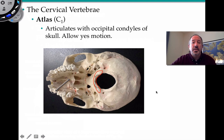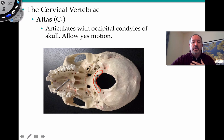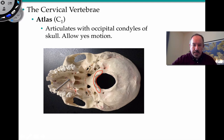C1 is also known as the atlas — named from mythology for holding up the earth — because it holds up the skull. It articulates with the skull via the occipital condyles of the occipital bone. These allow the yes motion — the skull moving forward and down.